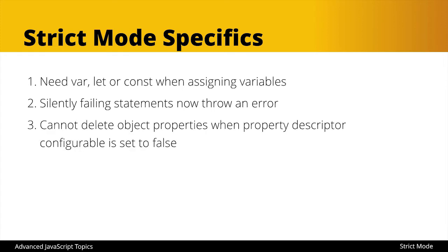There are certain things that in the past might not have thrown an error — they might have silently failed or just been a warning — but now they are going to throw an error. For example, object properties: if you've assigned them in a certain way, you can no longer delete them. In the past that kind of was allowed to happen or would pretend it was happening while nothing really changed behind the scenes. Also, when setting up parameters, in the past you could name two parameters the same name, and that's no longer allowed. Strict mode is just trying to be more clear about what's happening.